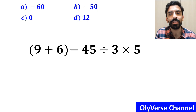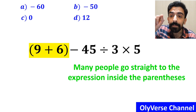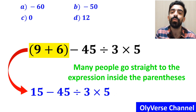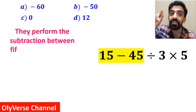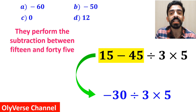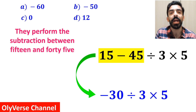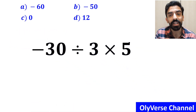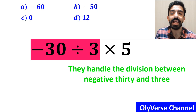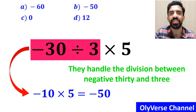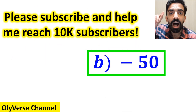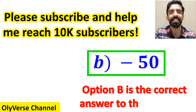In the first step of solving this question, many people go straight to the expression inside the parenthesis and simplify the whole expression to 15 minus 45, divided by 3, times 5. Next, they perform the subtraction between 15 and 45, simplifying to negative 30, divided by 3, multiplied by 5. Finally, they handle the division, getting negative 10 multiplied by 5, which gives them negative 50 — and they quickly say that option B is the correct answer. However, this answer is absolutely wrong.